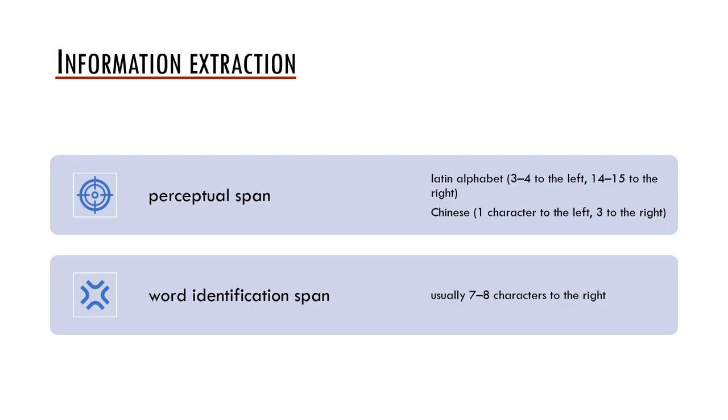One can ask, why is the perceptual span so disproportionate? There are several reasons for this. For example, we retrieve also the information about what follows after the word we are fixating and therefore we need to see behind the word. Furthermore, we plan our forward saccades already while fixating a certain area and the perceptual span may help us to do this effectively.